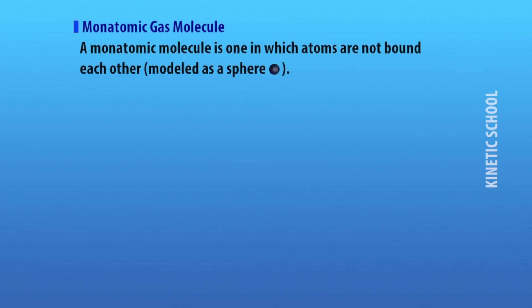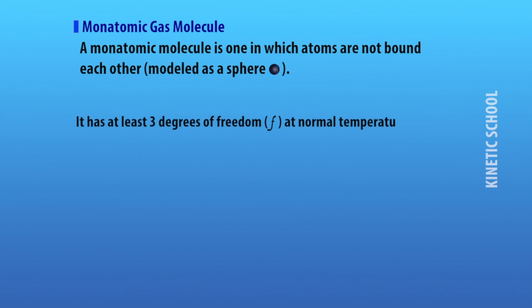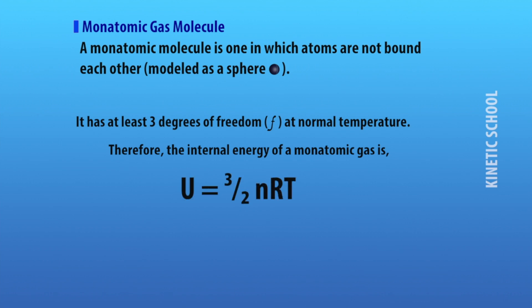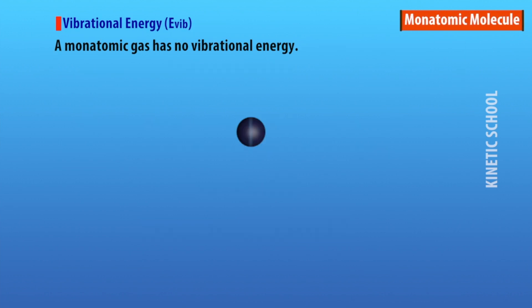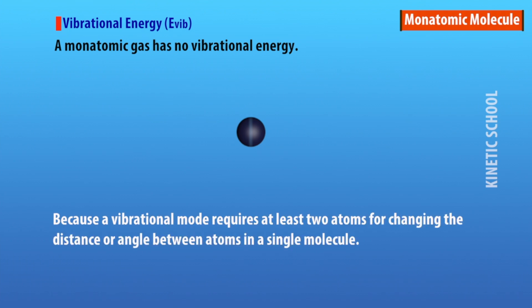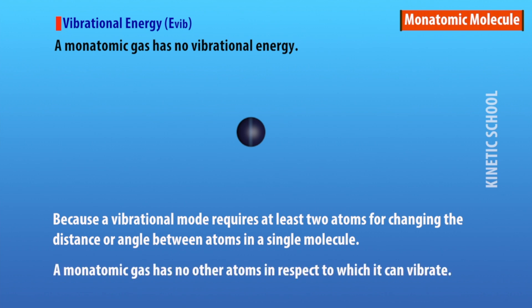A monatomic molecule is one in which atoms are not bound to each other. It has at least three degrees of freedom at normal temperature, so the internal energy of a monatomic gas is U = (3/2)nRT — for example, helium, neon, argon. A monatomic gas has no vibrational energy, because a vibrational mode requires at least two atoms to change the distance or angle between them.